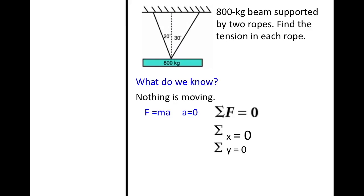Well, let's go ahead and look at what we know. We know that nothing is moving, that the ropes are holding the object still. So given that we know that f equals ma, and that acceleration is zero because nothing is moving, we know that the sum of all the forces will equal zero. That means our x components are going to equal zero, and our y components are going to equal zero.